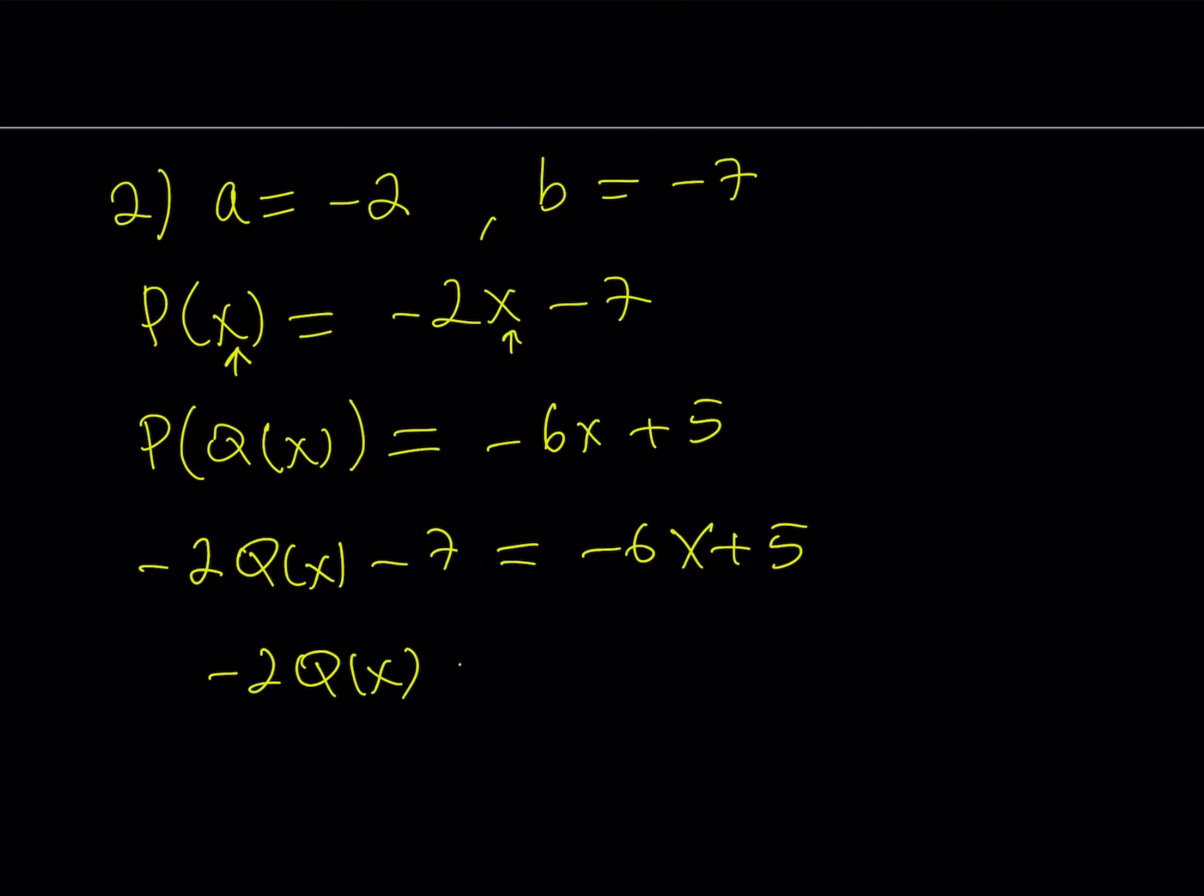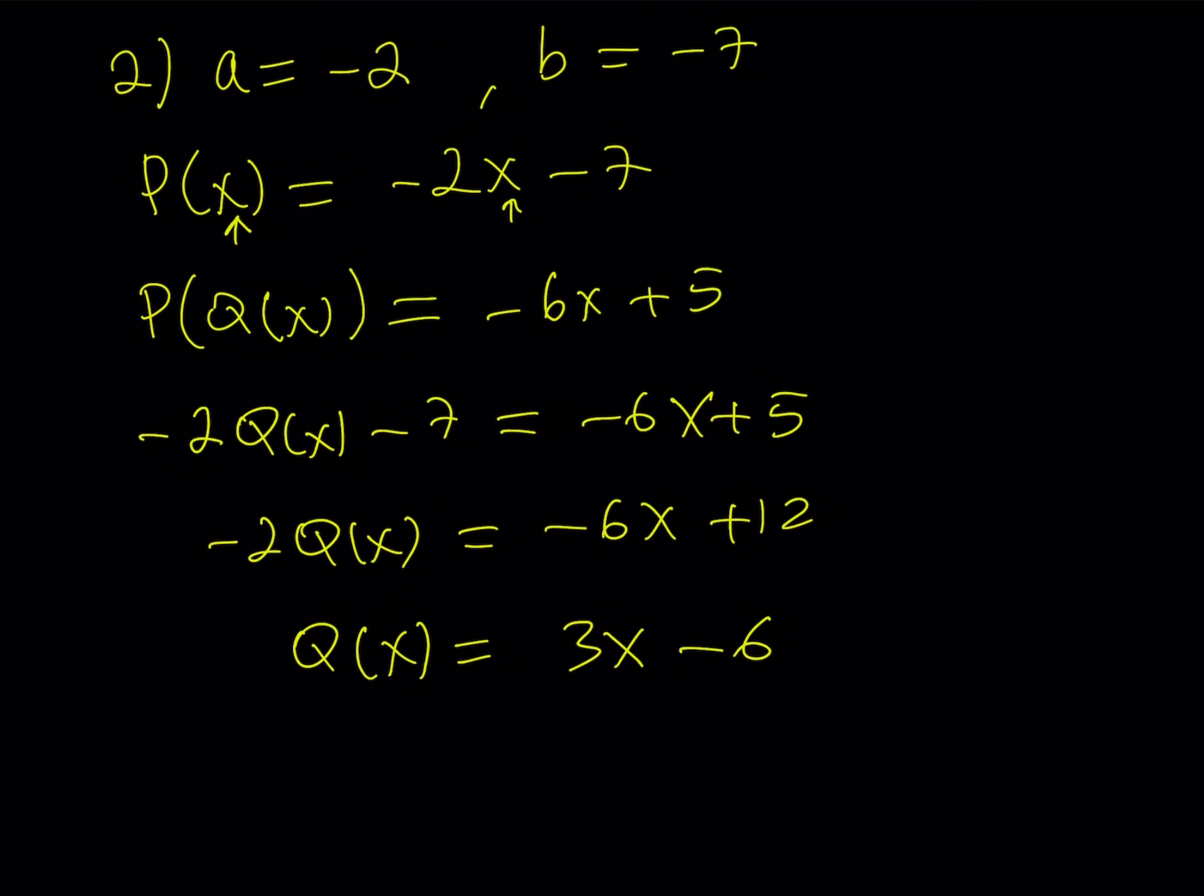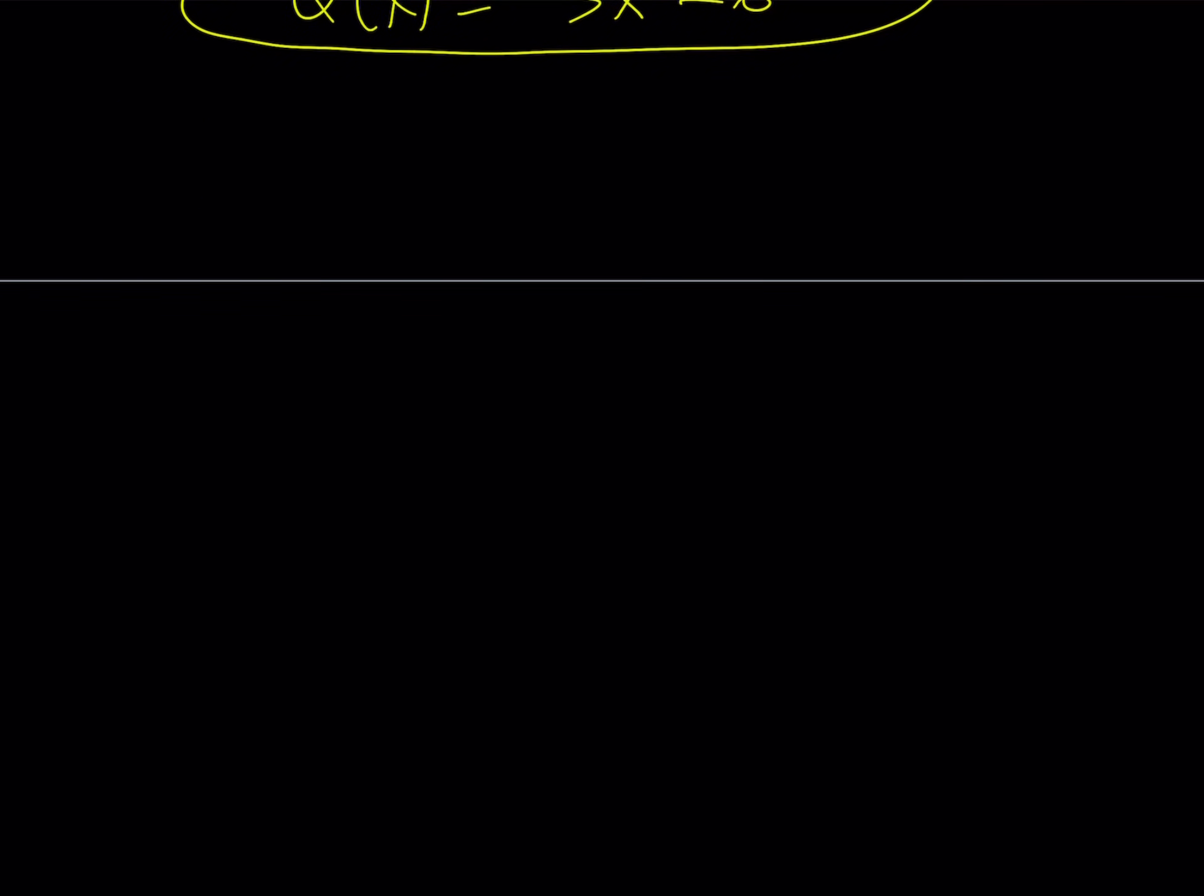So add 7 to both sides and then divide both sides by negative 2, and you get Q of X equals 3X minus 6. So if P of X equals negative 2X minus 7, then Q of X equals 3X minus 6.